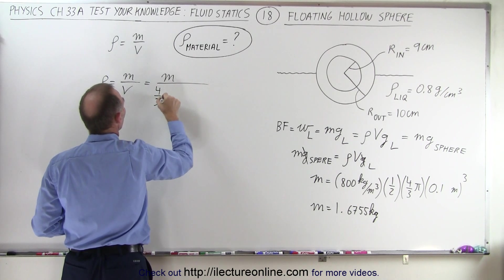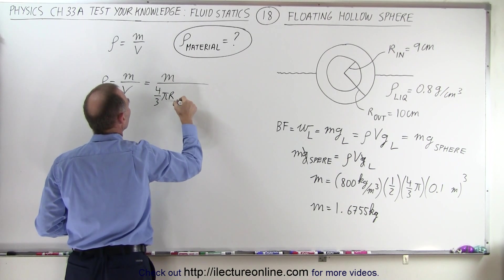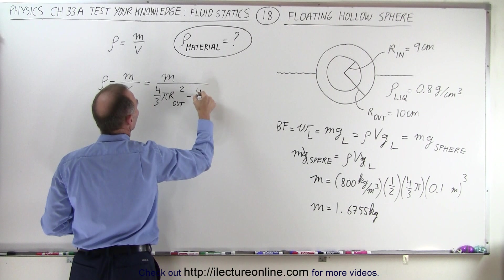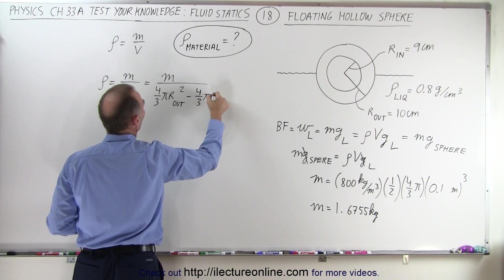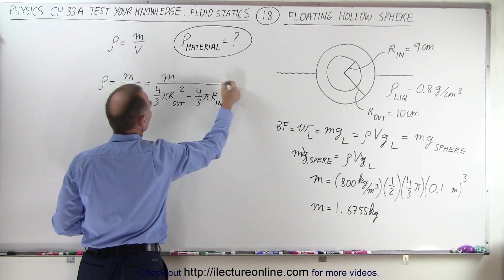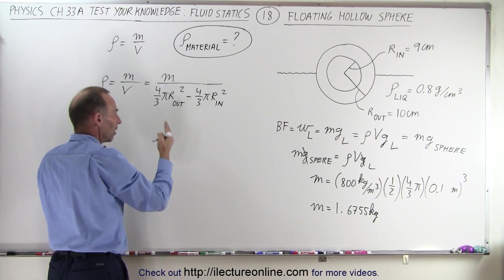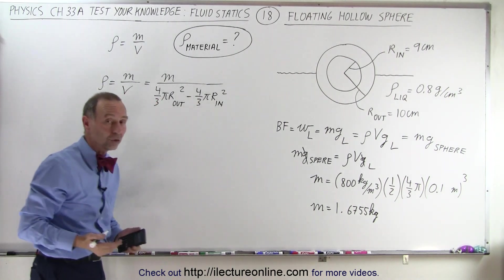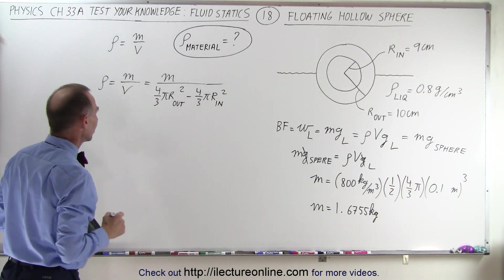So it would be 4 thirds pi times r out squared minus 4 thirds pi r inner squared. So we take the outer radius for the outer volume, subtract the hollow portion of it, and then we divide that into the mass.